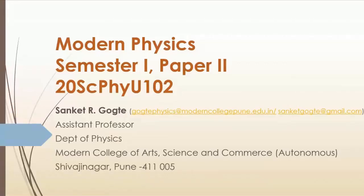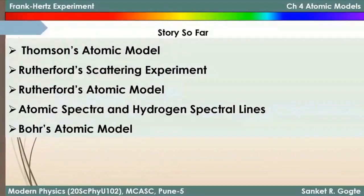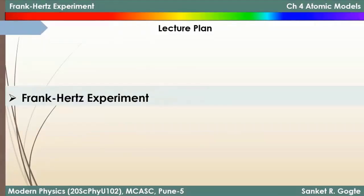Welcome to this online lecture of modern physics. So far we have discussed atomic models: Thompson's atomic model, Rutherford's atomic model, atomic spectra, and Bohr's atomic model. In this lecture we want to discuss the Frank-Hertz experiment, which further proved that electron energies in atoms are discrete — they are not continuous.